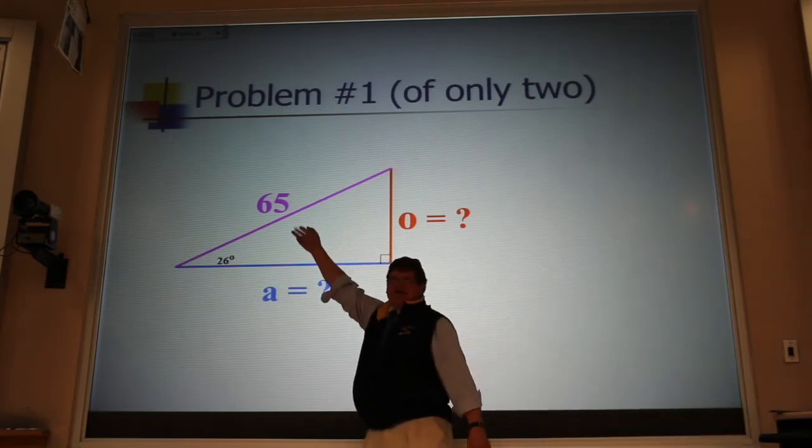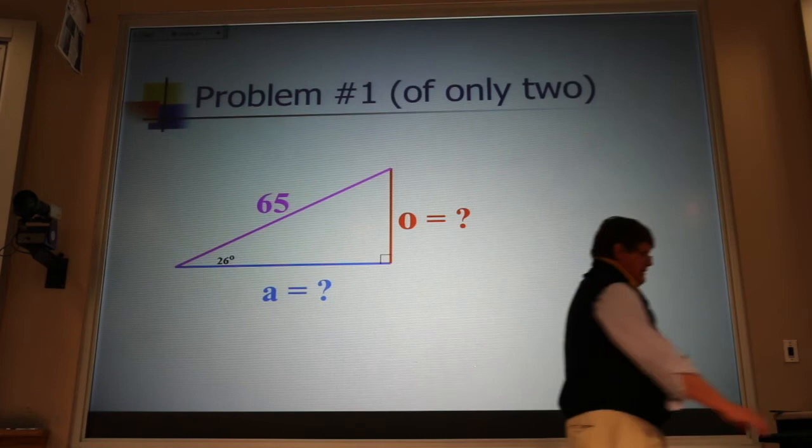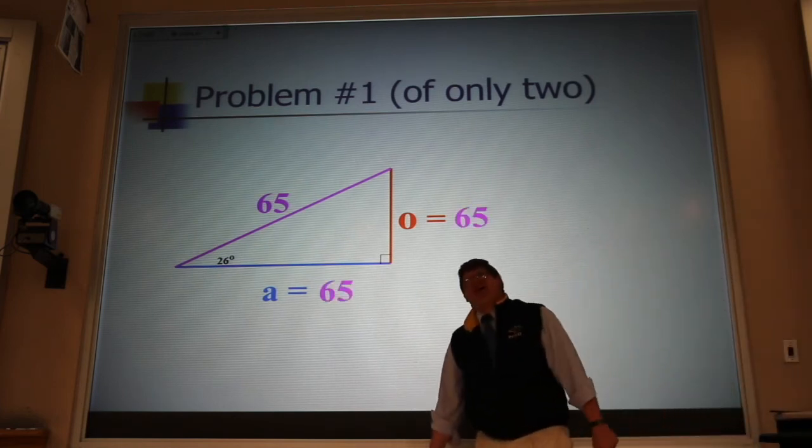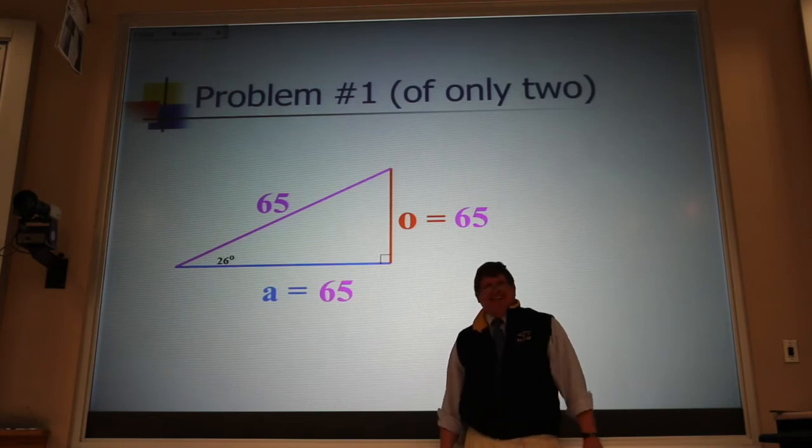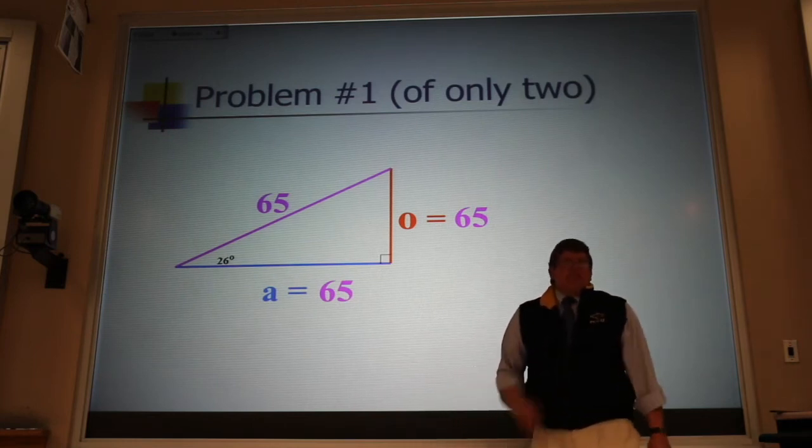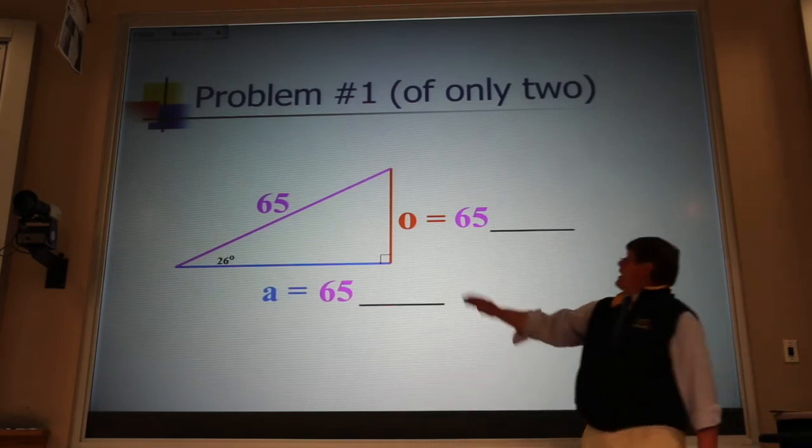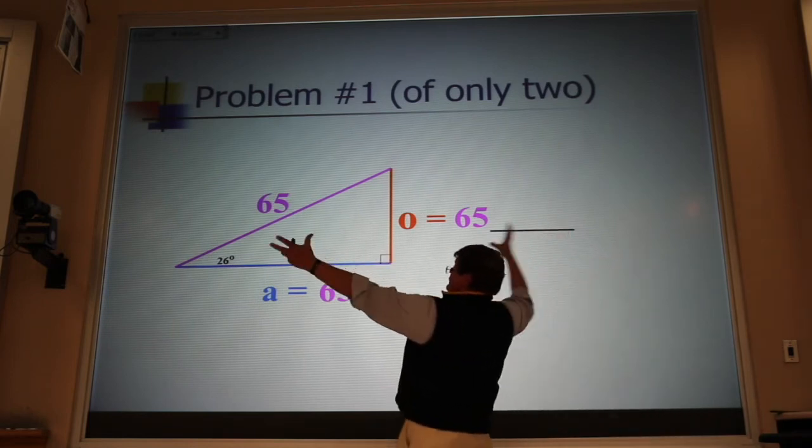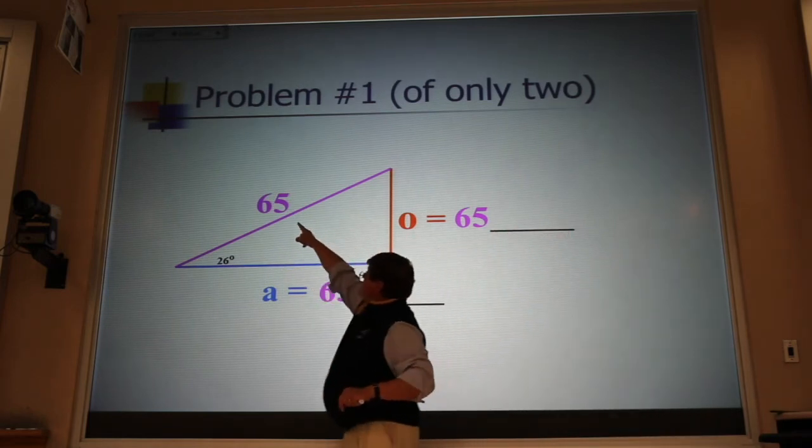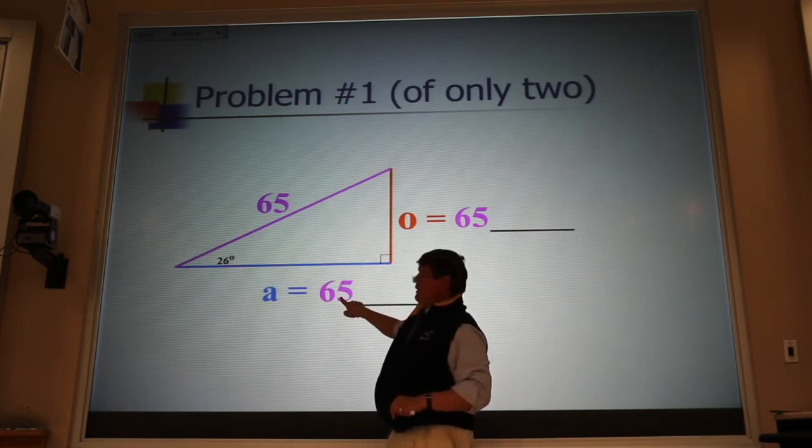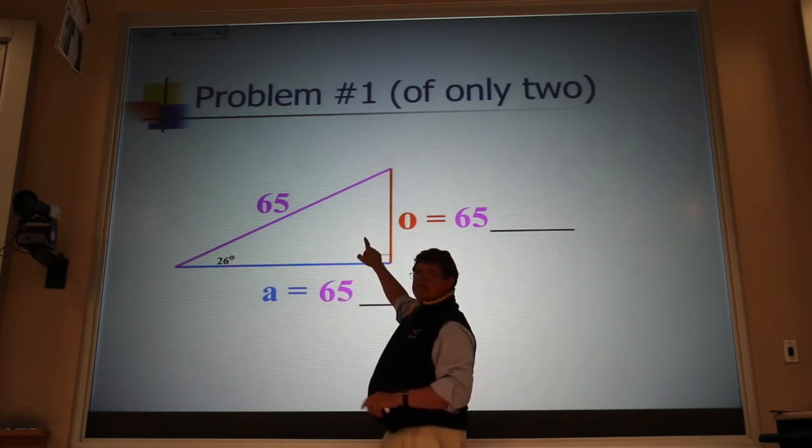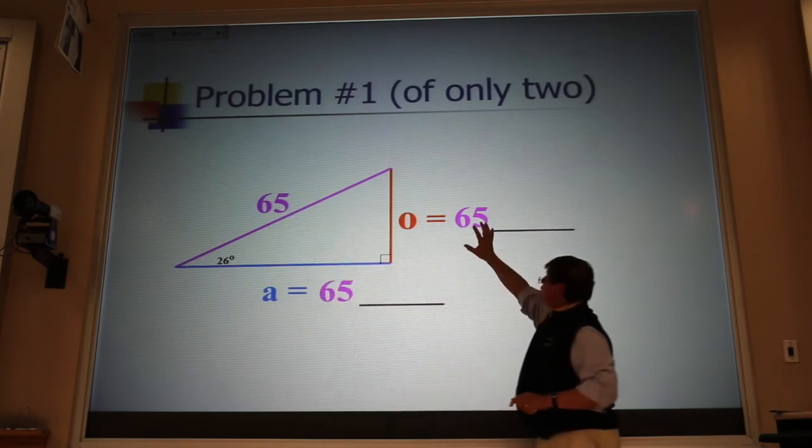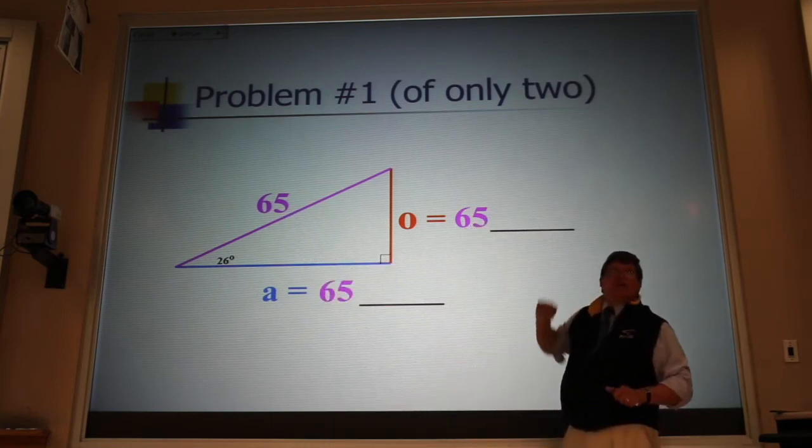Let me suggest an easier way. If that hypotenuse is 65, then those sides are 65. No, Greg! No, they're not. But they are 65 times some fudge factor. Because if I blow up this triangle and this gets bigger, so do these. So that means that these must be proportional to that. They must be equal to 65 times some fudge factor.